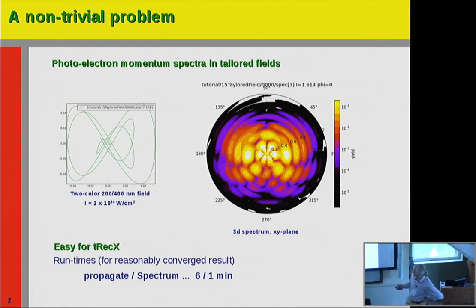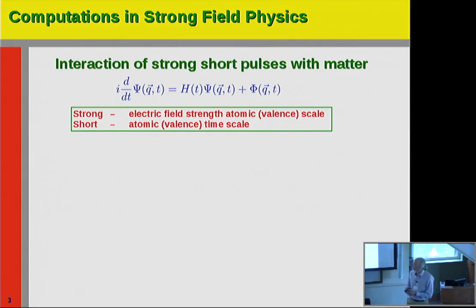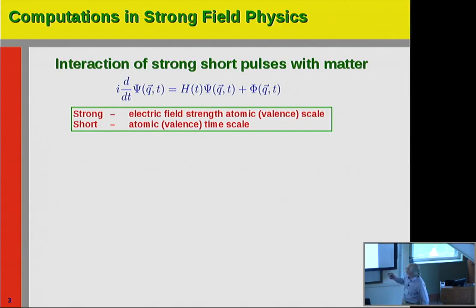Just to set the stage for people who are not fully in the field: strong field physics means the interaction of strong short pulses with matter. It means we solve the Schrödinger equation — as perhaps 30% of physicists today are doing — but under the condition that we have a time-dependent Hamiltonian. Strong field means we have electric field strength that is comparable to the fields at the valence shell.